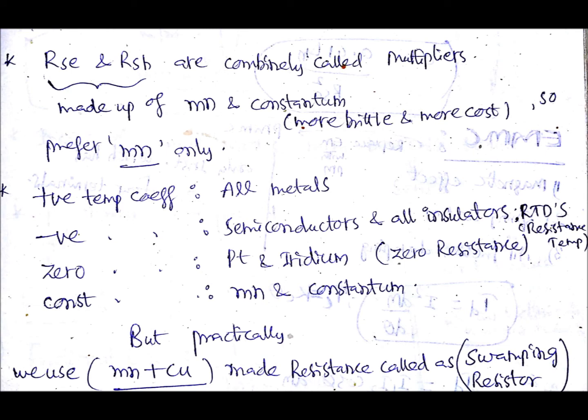We have some resistors or multipliers known as RSC and RSH and they are combinedly called multipliers. They are made up of Manganin and Constantan. Because Constantan is more brittle and more cost, we are going to prefer only Manganin to make those resistors. This is one important point.